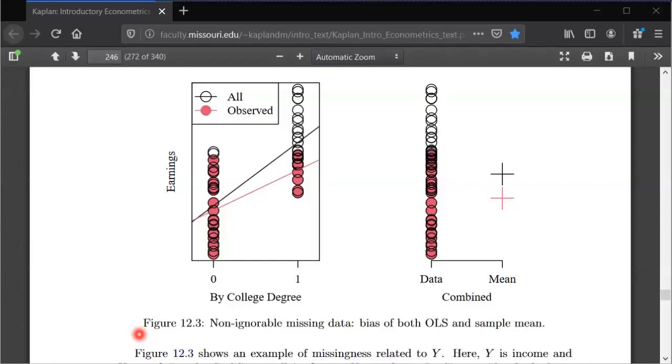In this video I'm going to talk through this figure in the textbook to help explain an example where non-ignorable missing data causes bias, both when looking at the unconditional mean and when looking at a regression slope.